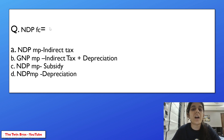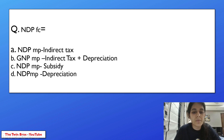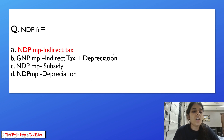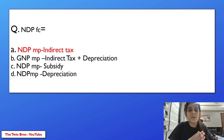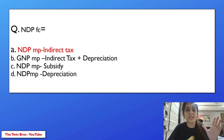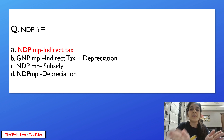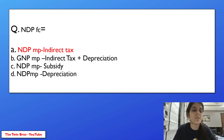NNP at FC, net domestic product at factor cost, is equal to — NNP at MP minus indirect tax, GNP at MP minus indirect tax plus depreciation, NNP at MP minus subsidy, or NNP at MP minus depreciation? The answer is option A: NNP at MP minus indirect taxes. Market price equals factor cost when we add taxes — products sold at market price are inclusive of taxes. So NNP at market price minus indirect taxes gives net domestic product at factor cost.